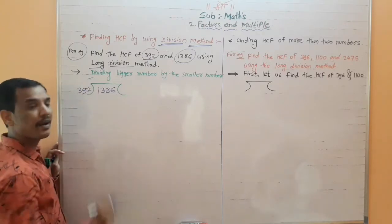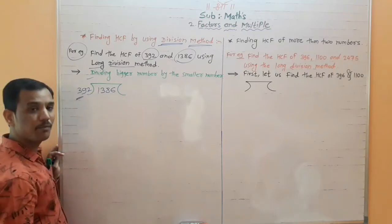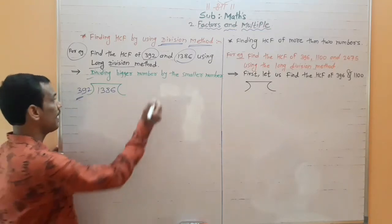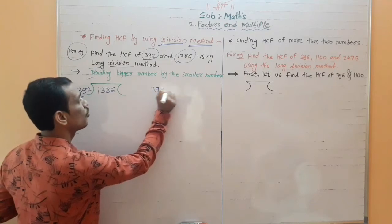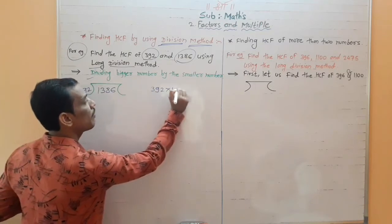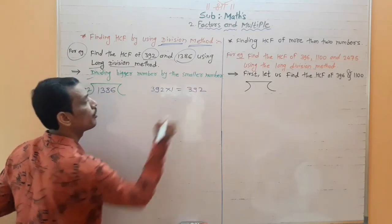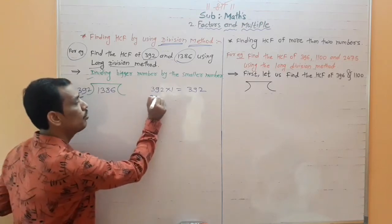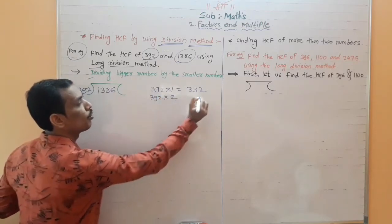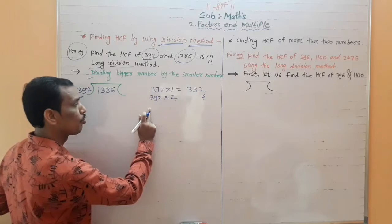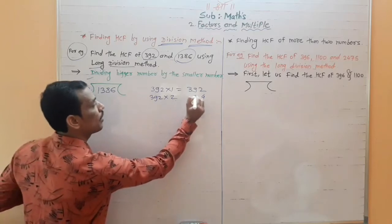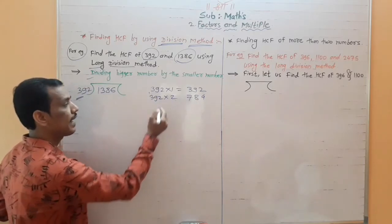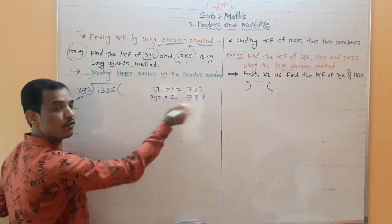Now make a table. Here the big number comes, so you can find their table. 392 multiplied by 1 gives 392. Now 392 multiplied by 2: 2 twos are 4, 9 twos are 18 carry 1, 3 twos are 6 and 1 is 7, so we get 784.